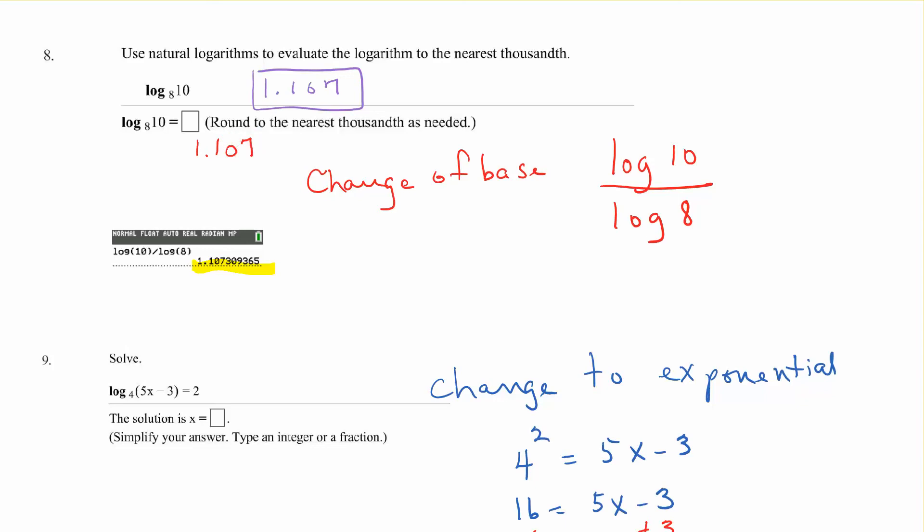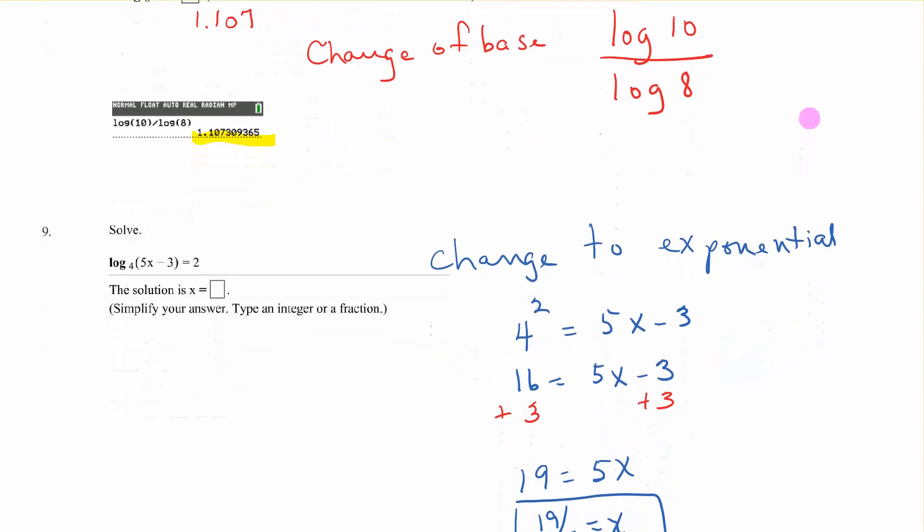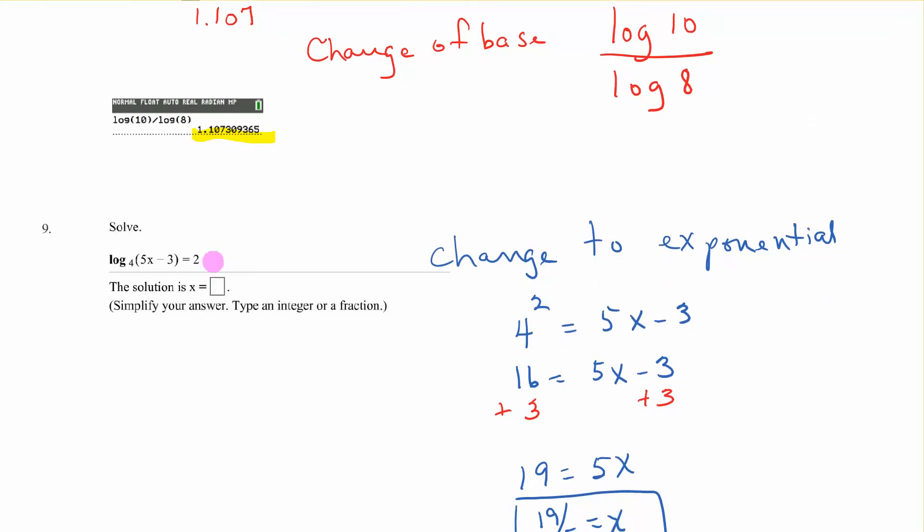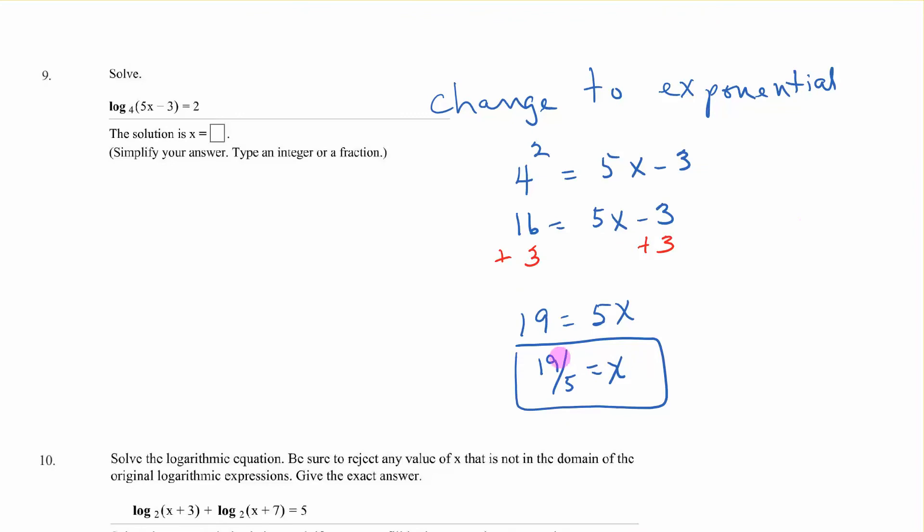Number 9. Log base 4 of 5x minus 3 equals 2. Changes to exponential. So you have 4 squared, 4 to the second equals 5x minus 3. So that 16 equals that. Add 3, so 19 equals 5x. So 19 over 5 equals x.